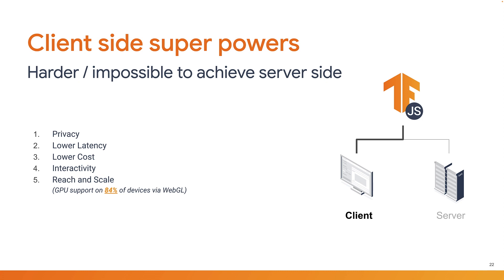Second is lower latency. As JavaScript has direct access to the device sensors — such as the microphone, camera, accelerometer, and more — there's no round-trip time to the server to analyze that data. Latency to the server could be close to 100 milliseconds on a mobile connection, which would cap frames per second at about 10 if sending images one by one. With TensorFlow.js running on-device, you can go much faster than that.